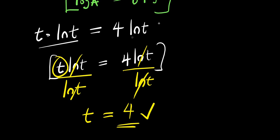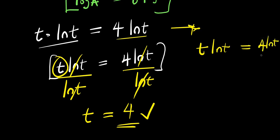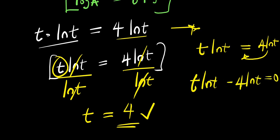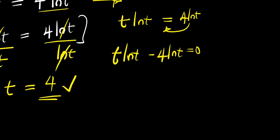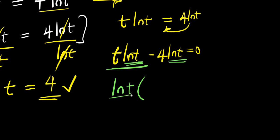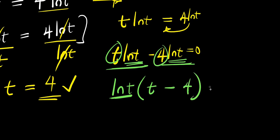You can also solve this using another way. You have t ln t equals 4 ln t. What you are going to do is move the 4 ln t over, so you have t ln t minus 4 ln t equals 0. The next step is to factor out ln t, because you have it in both terms. After factoring, you have ln t times the quantity t minus 4, and this equals 0.